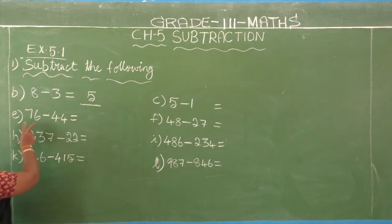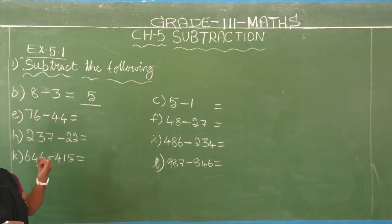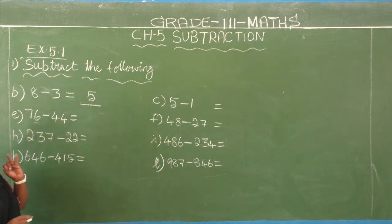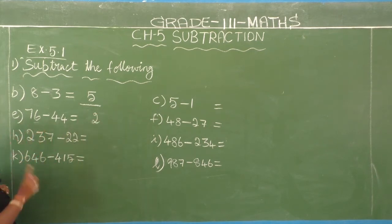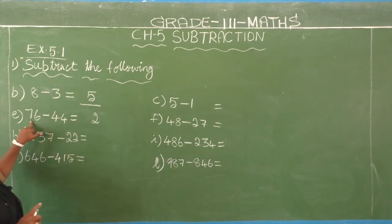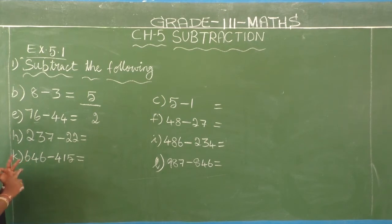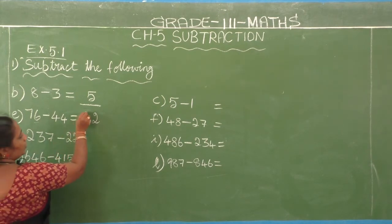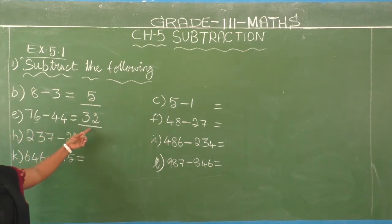E1: 76 minus 44 — two-digit by two-digit. Take the ones place number: here they gave 4, and first number ones place is 6. 4 after 5, 6. Stop at 6, so the answer is 2. Write 2 in ones place. Then take the tens place: second number is 4, first number is 7. 4 after 5, 6, 7. Answer is 3. Write 3 in tens place. So 76 minus 44 equals 32.